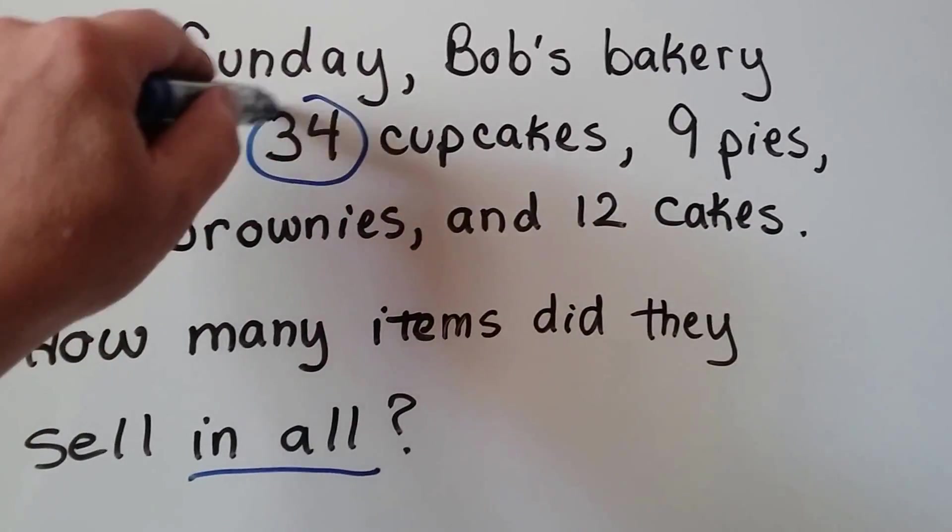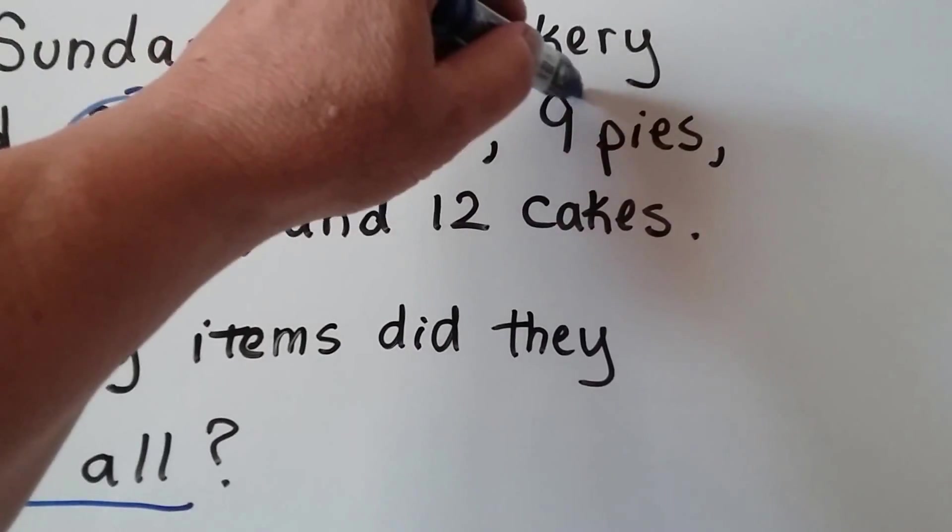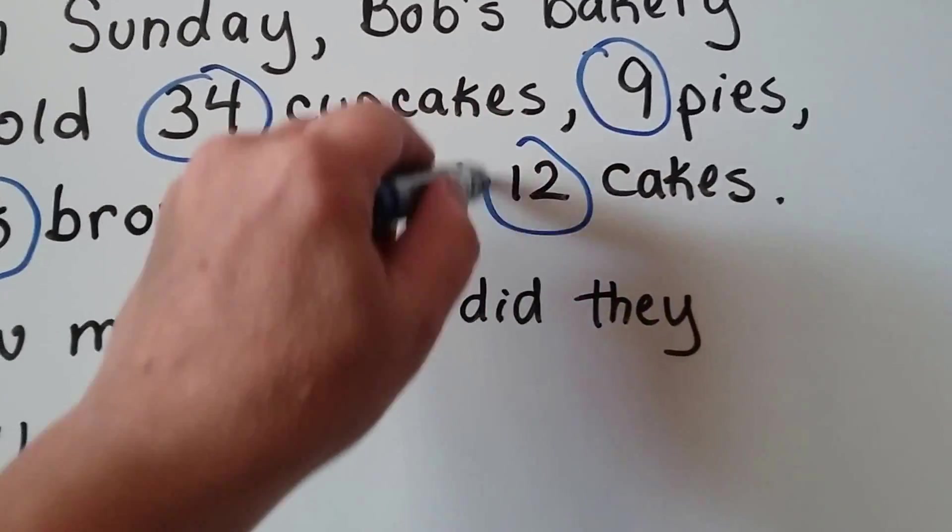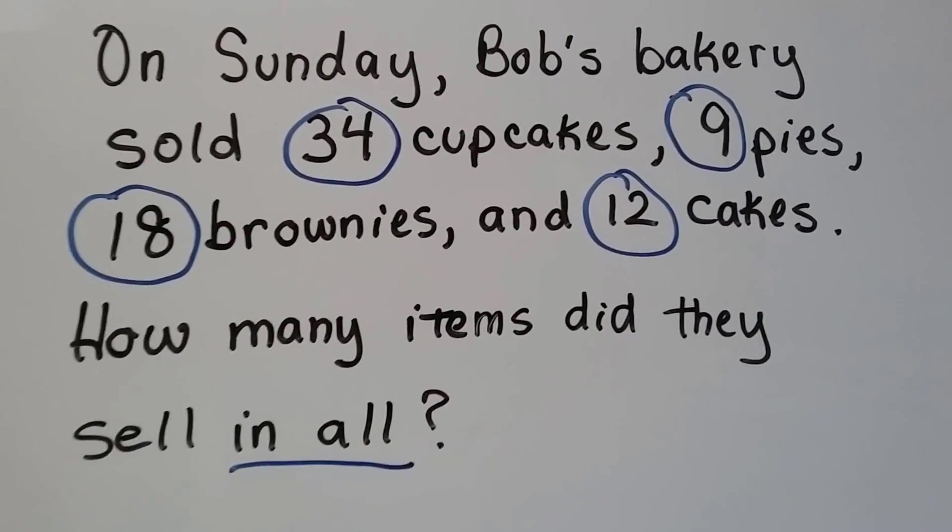We can circle the important numbers. We need to know how many items they sold in all. So there were 34 cupcakes, there were 9 pies, there were 18 brownies, and 12 cakes. So those are the numbers that we're going to have to add together.